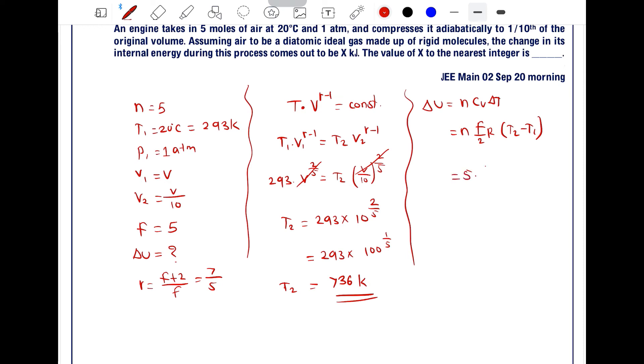Now substitute the values: n = 5, F = 5, so (5 × 5/2) R × delta T = (25/2) R × (736 - 293) = (25/2) R × 443.